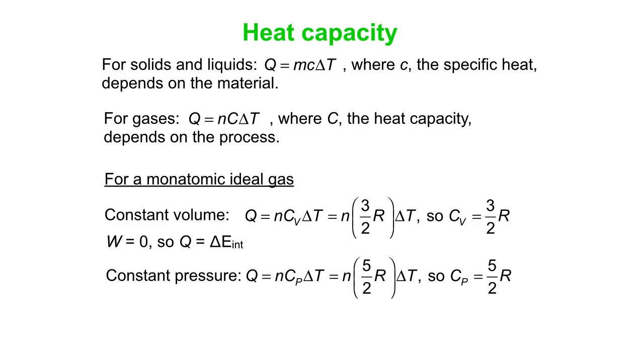What if you did a constant pressure process? In that case, you would say it's n, not Cv, which is the heat capacity constant volume, but Cp, the heat capacity constant pressure. It turns out the Cp value is 5/2 of R. You can derive that from the first law. Q is W plus changed internal energy. You get 3/2 nR∆T from the changed internal energy, and the work gives you another nR∆T. That's the way you end up with 5/2.